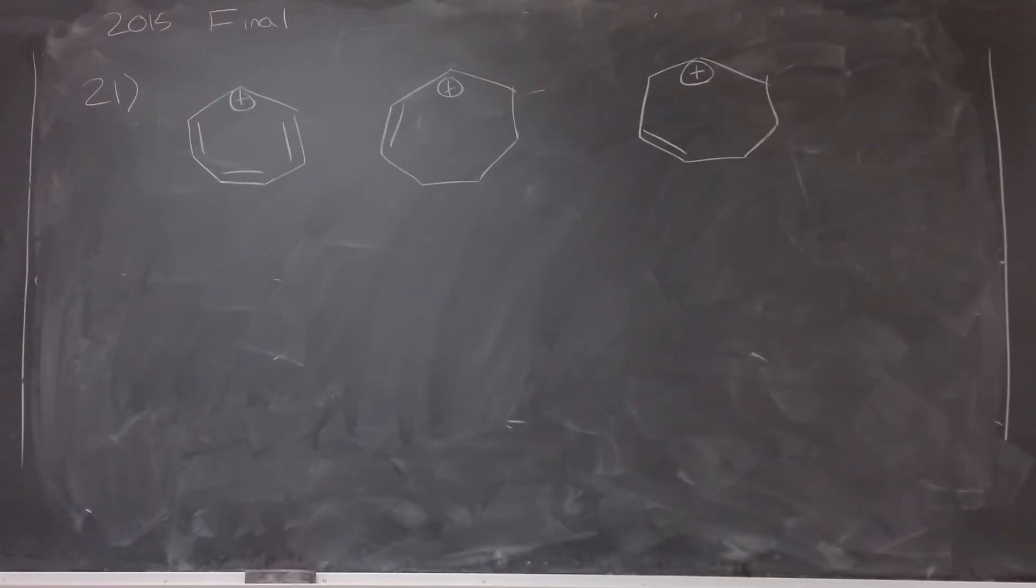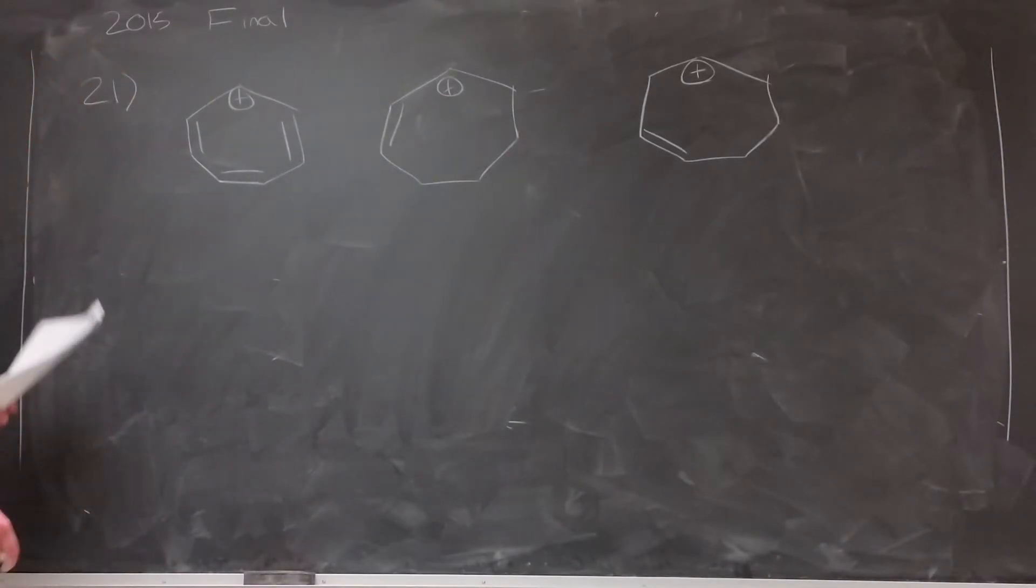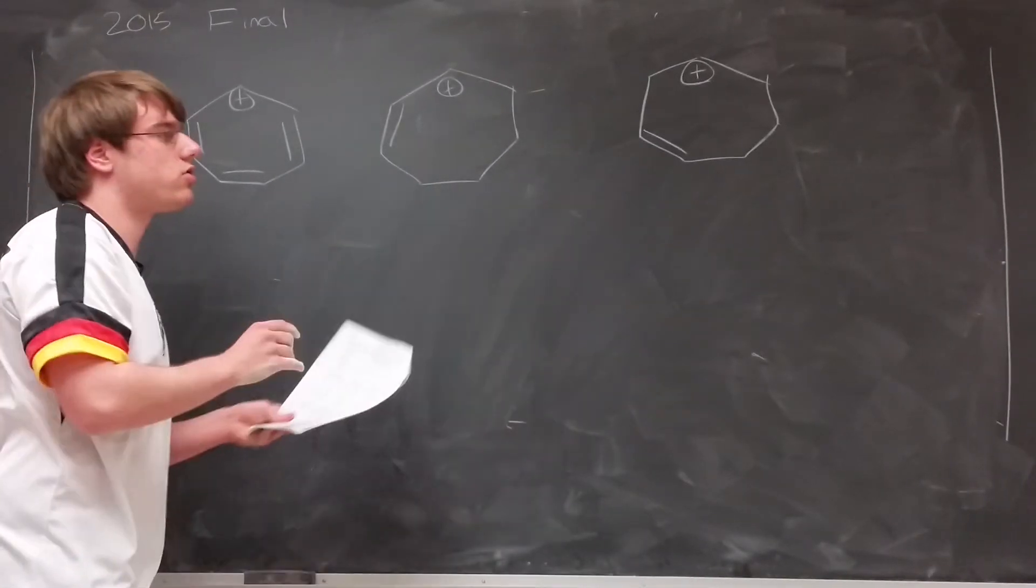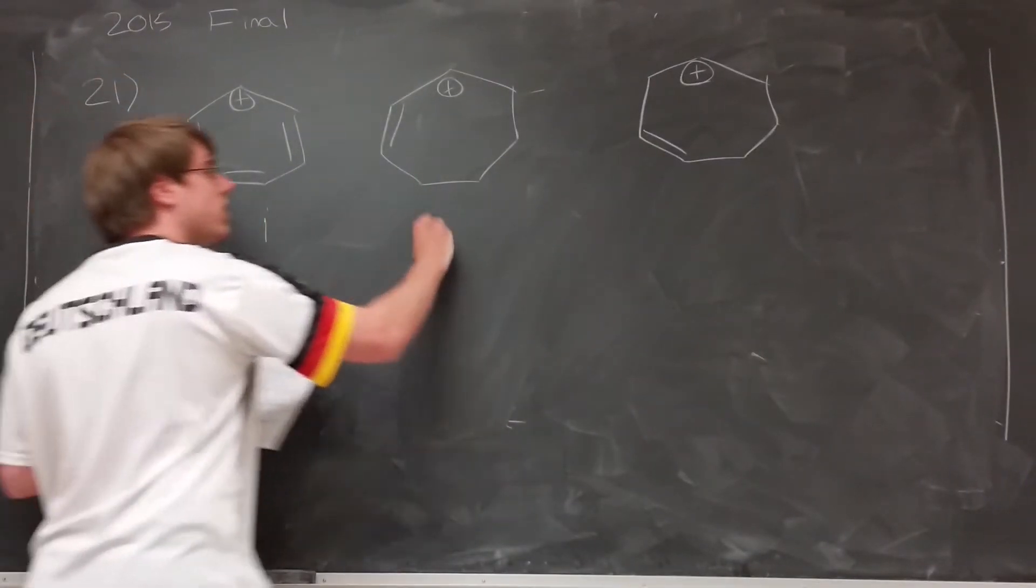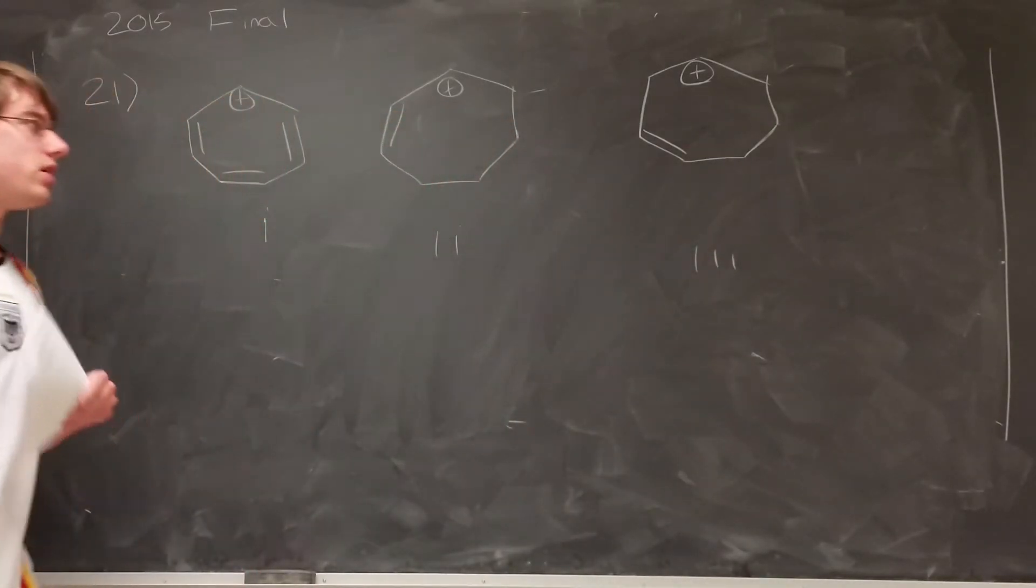Question 21 is on the stability of charges, and it's secretly an aromaticity question. This is stuff you learned about for the first exam. One thing I will say is if they ever give you a question of rank these structures in order of increasing stability and you see rings, it's probably a secret question about aromaticity.